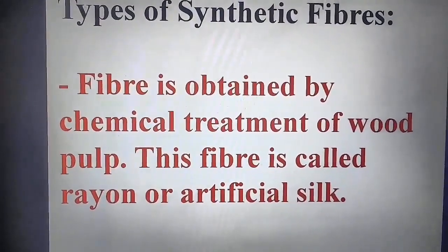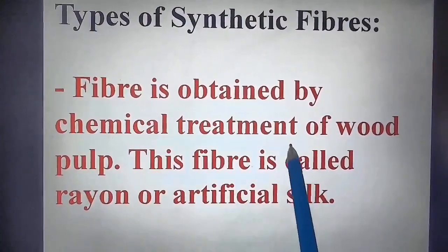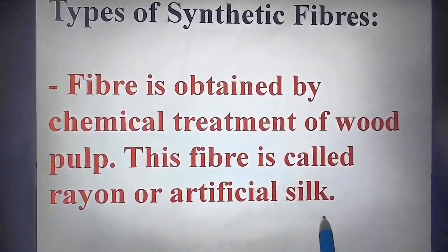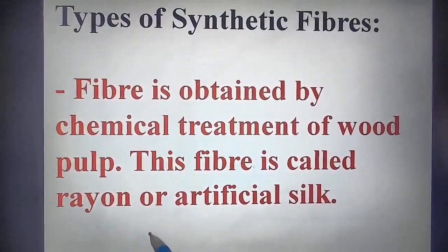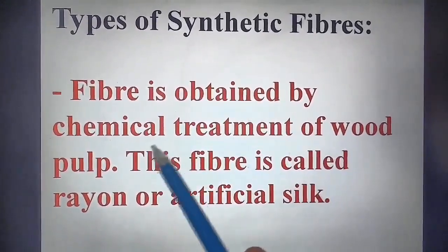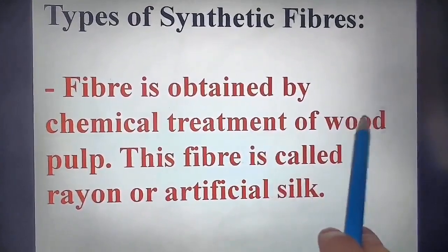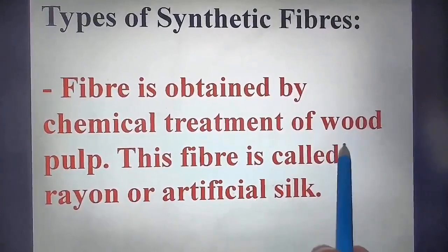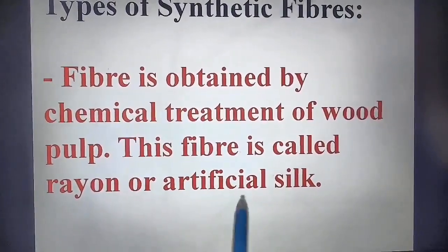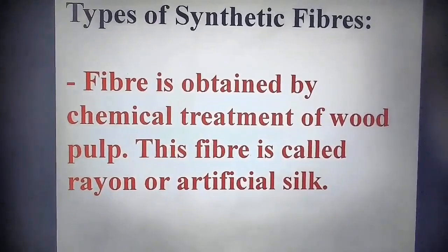Coming to types of synthetic fiber — rayon is obtained by chemical treatment of wood pulp. The fiber is called rayon or artificial silk. Rayon is a semi-synthetic fiber because it uses wood, which is a natural resource, and also involves chemical treatment. Wood plus chemicals makes it semi-synthetic. Rayon appears like silk but it is not pure silk — it is an artificial silk and is cheaper.